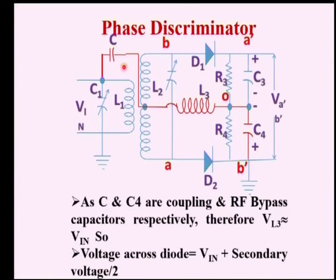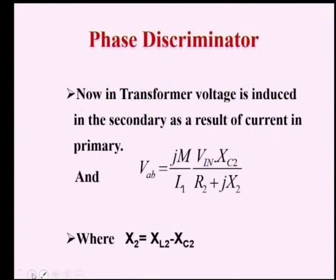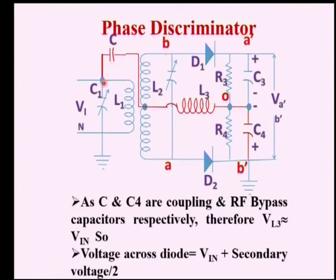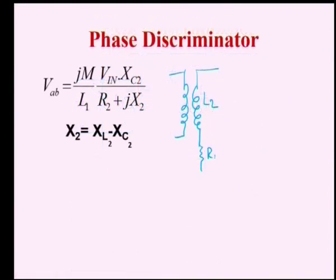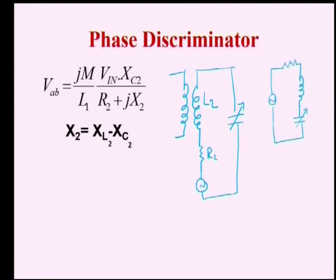Now we will analyze the phase discriminator. Consider inductor L2, which contains a small value of resistance, and there is mutual inductance between the primary and secondary. Using the mutual inductance concept, we analyze the phase discriminator circuit. In the primary, L2 has a small resistance represented by R2. I have redrawn the transformer circuit — the voltage here is nothing but the mutually induced voltage due to current flow in the primary. We take the output across the capacitor, at terminal V_AB in the equivalent circuit.